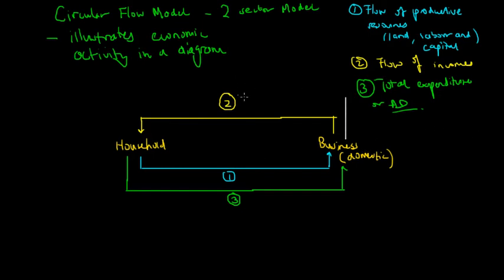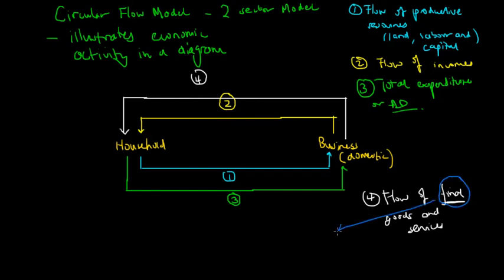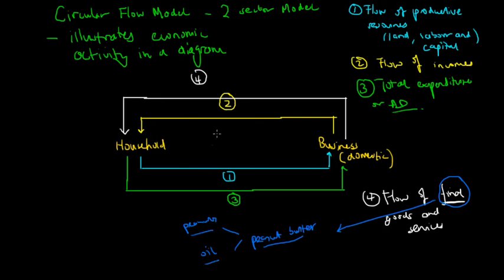Finally we have the last flow, which is the flow of final goods and services — flow four. It is important to note that the word 'final' means consumable goods and services; it doesn't mean intermediate goods and services. For example, if you have peanut butter, the ingredients required to make it — let's assume peanuts and oil — are not included in flow four because they're not final goods ready to consume. They're actually intermediate goods. The final good recorded in flow four is the peanut butter itself.